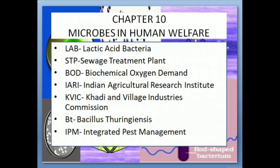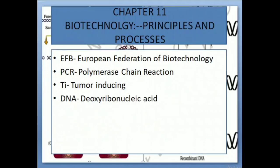Chapter 10: Microbes and Human Welfare. LAB: Lactic Acid Bacteria. STP: Sewage Treatment Plant. BOD: Biochemical Oxygen Demand. IARI: Indian Agricultural Research Institute. KVIC: Khadi and Village Industries Commission. Bt: Bacillus Thuringiensis. IPM: Integrated Pest Management. Chapter 11.